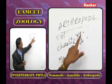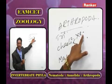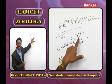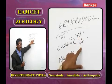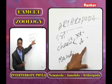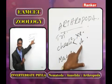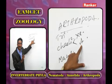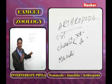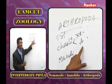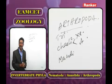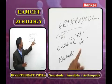In Merostomata, the genital operculum is present and respiratory organs are book gills. The body is divided into prosoma, mesosoma, and metasoma; the metasoma ends as a telson. In Arachnida, all are terrestrial. The body is divided into prosoma, mesosoma, and metasoma, but telson is absent. Four pairs of legs are present — hence called Octopoda.